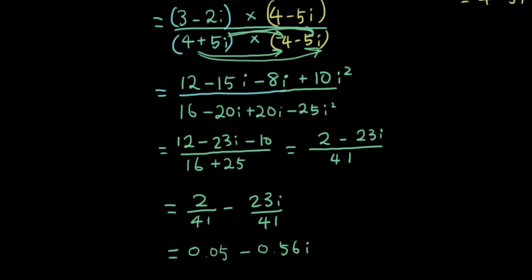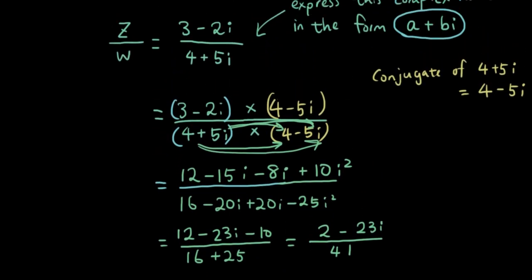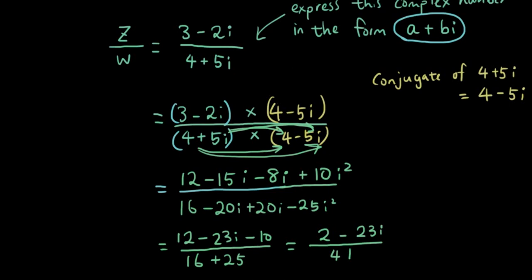So I typed 2 over 41 in the calculator and I got 0.05. 23 over 41 is 0.56. So the answer is 0.05 minus 0.56i. So let's try typing this in GeoGebra and see if it gives us the answer.